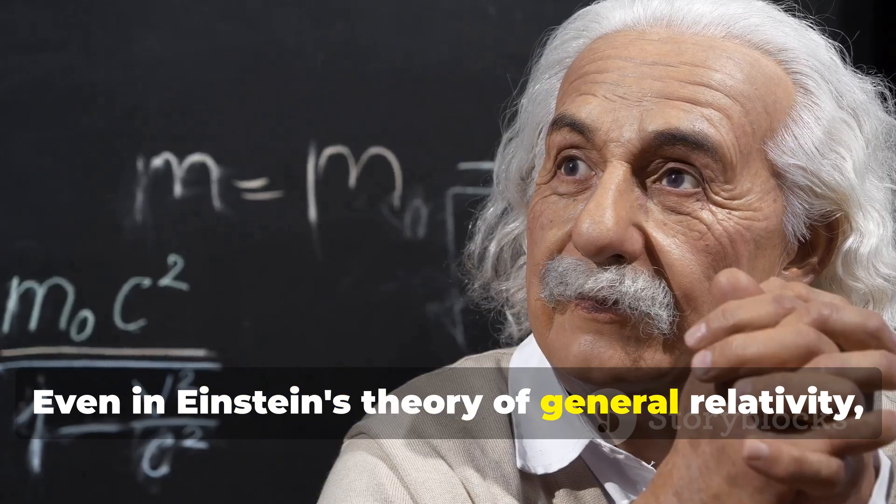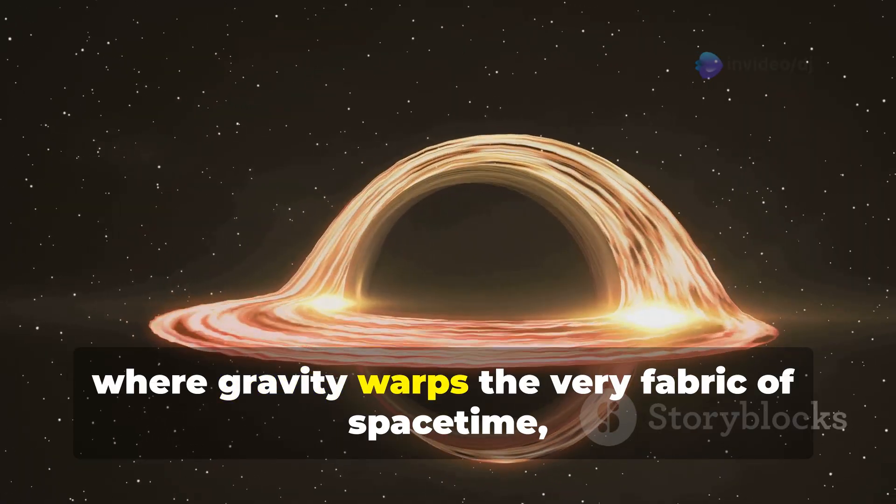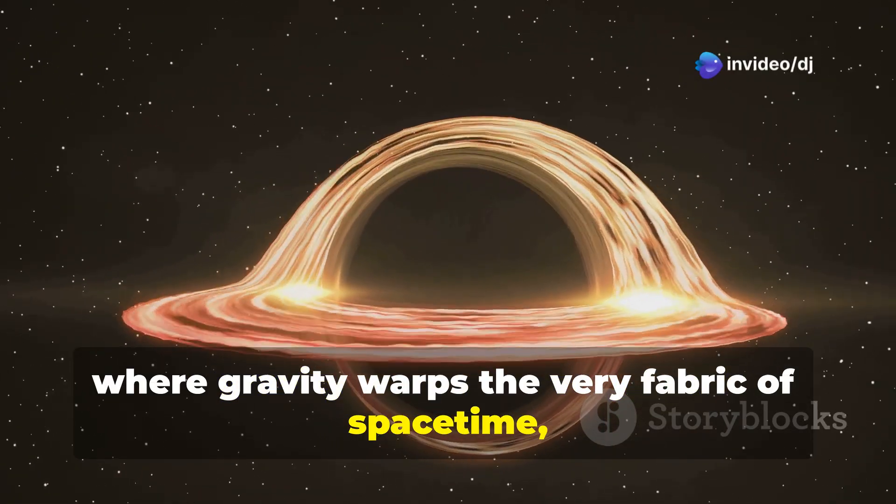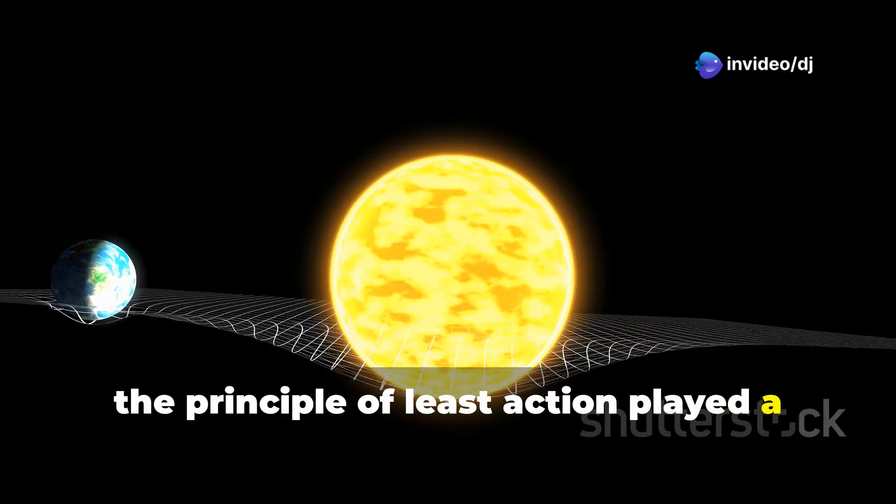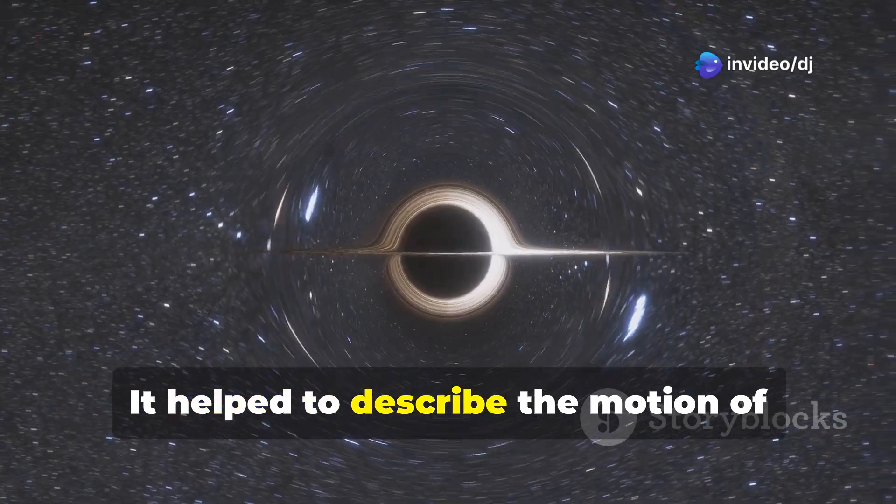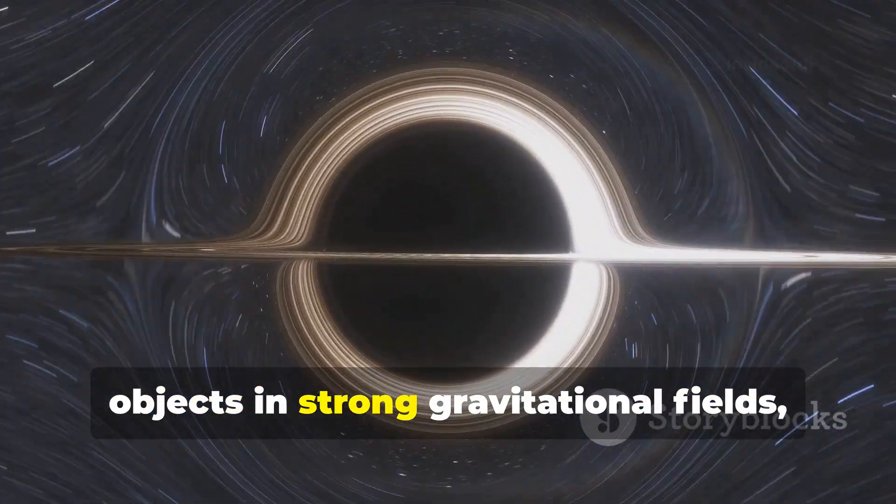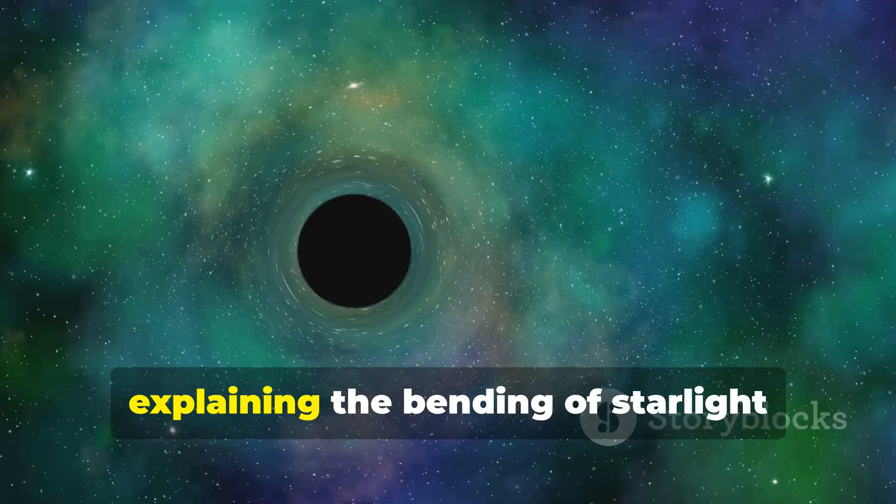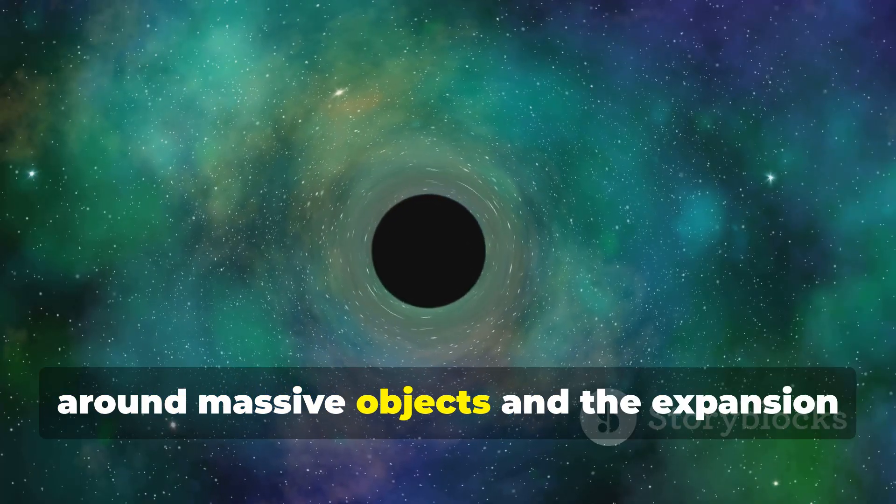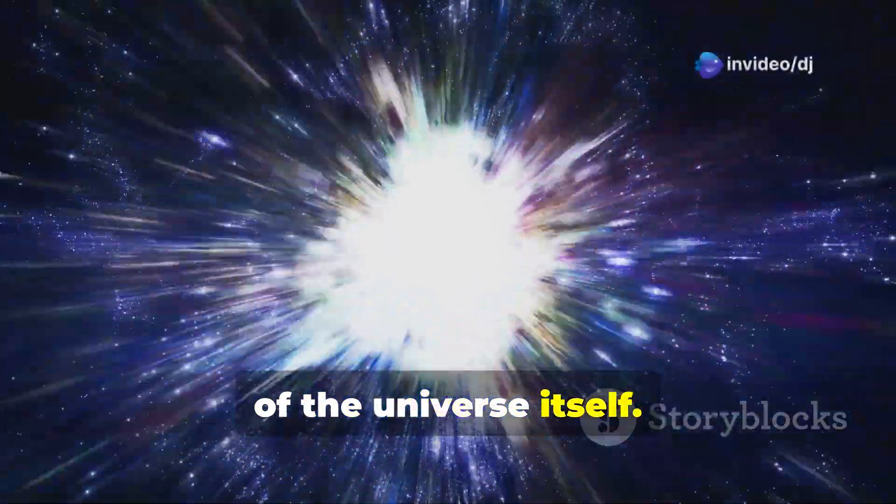Even in Einstein's theory of general relativity, where gravity warps the very fabric of space-time, the principle of least action played a crucial role. It helped to describe the motion of objects in strong gravitational fields, explaining the bending of starlight around massive objects, and the expansion of the universe itself.